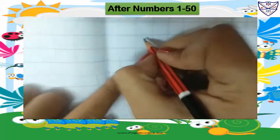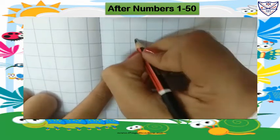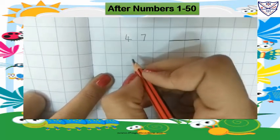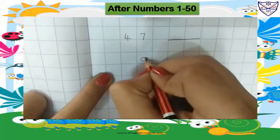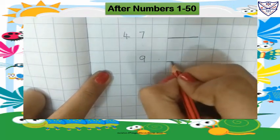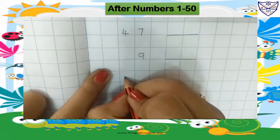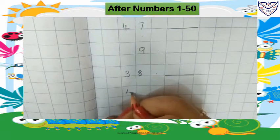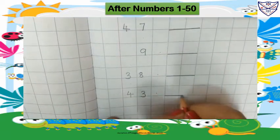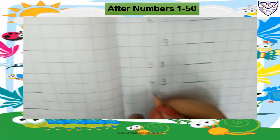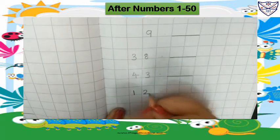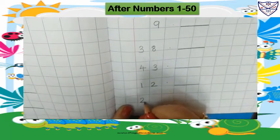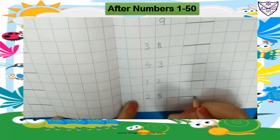Write here 47, leave one box, put here a small dash, leave one line. Write here 9, leave one box, put here a small dash, leave one line. Write here 38, leave one box, put here a small dash, leave one line. Write here 43, leave one box, put here a small dash, leave one line. Write here 12, leave one box, put here a small dash, leave one line. Write here 25, leave one box, put here a small dash.